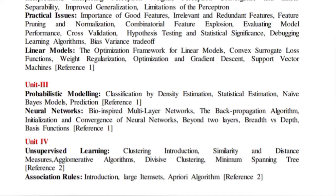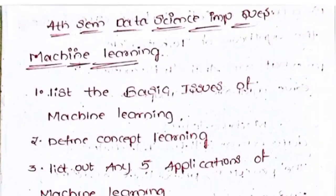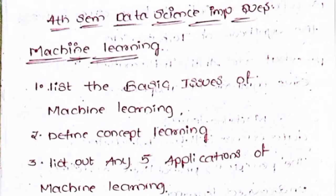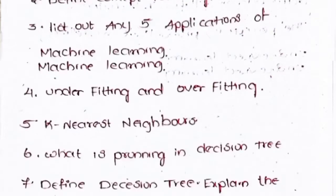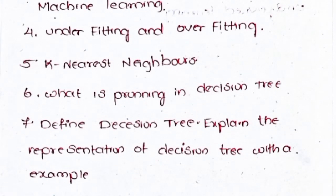This is the 4th semester data science important question — machine learning. First: list the basic issues of machine learning. Second: define concept learning. Third: list out any 5 applications of machine learning. Fourth: underfitting and overfitting. Fifth: k-nearest neighbors.